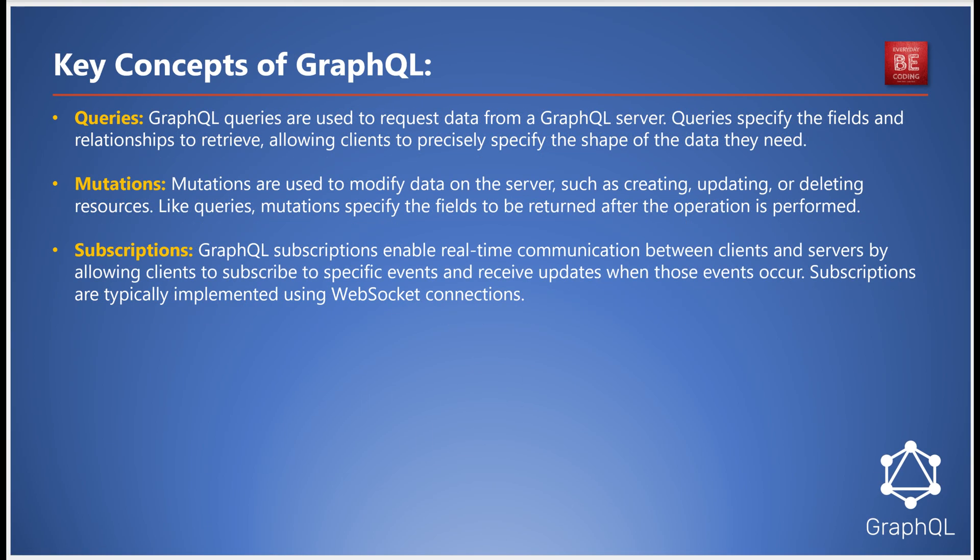How do we retrieve data using GraphQL? Through queries. Queries are precise — they let you specify exactly what data you want and how you want it structured. This specificity eliminates unnecessary data fetching, making the process highly efficient.